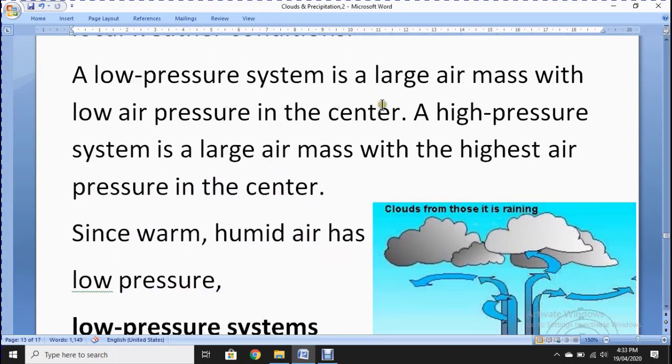A low pressure system is a large air mass with low air pressure in the center. A high pressure system is a large air mass with the highest air pressure in the center. So you should understand the difference here. Here the air pressure in the center is low, and here high pressure in the center. So it's very easy to understand.